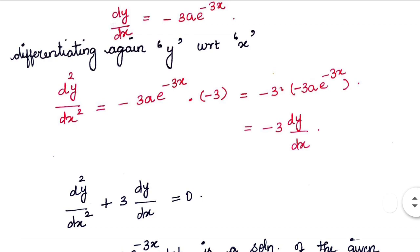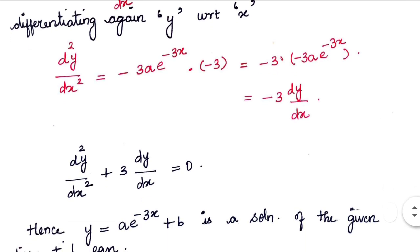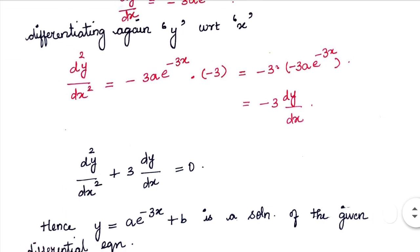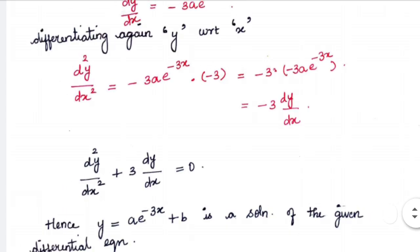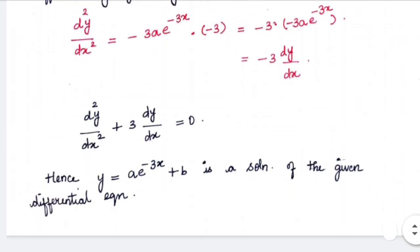Taking it to the left hand side, we get d²y/dx² + 3·dy/dx = 0, which is the given differential equation in the problem. Hence we can say y = ae^(-3x) + b forms the solution of the given differential equation.